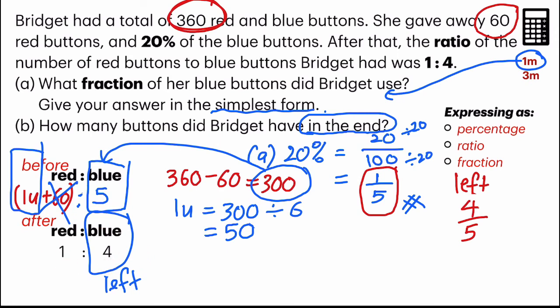So 5 units would be 50 times 5. I get 250 buttons. And that's my answer.